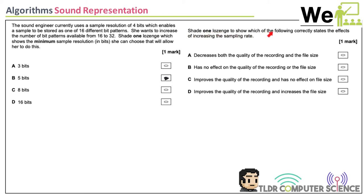Which option correctly states the effect of increasing the sample rate? It doesn't decrease quality, it doesn't have no effect — the correct answer is it improves the quality and increases the file size, because you're squeezing in more ones and zeros, getting closer to the original analog sound but increasing file size.